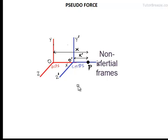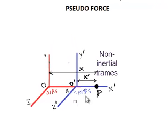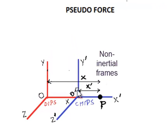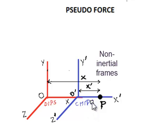Let's now derive the expression for the pseudo force. Suppose there are two people: Dibs, who has an origin at O, and Chips, who has an origin in a parallel coordinate system with origin O' elsewhere. When Dibs measures the location of a point P in space, he uses coordinates x, y, and z. When Chips measures the same point, he uses coordinates x', y', and z'. The y coordinate is the same for both of them; we haven't taken the z coordinate just to keep things simple.